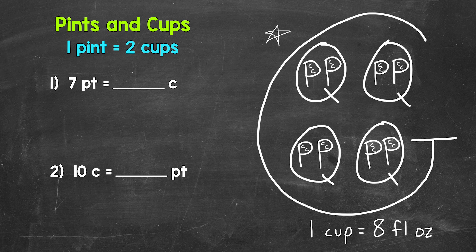Let's jump into a couple of basic conversions here where we will go from pints to cups and cups to pints. Starting with number one, where we have seven pints equals how many cups? Well, each pint equals two cups.